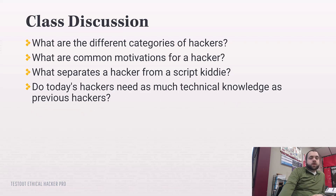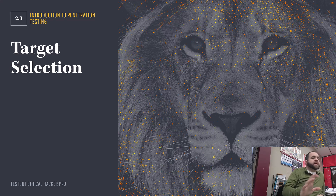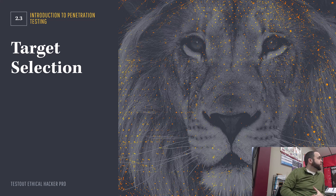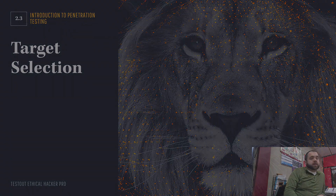We're going to end there. With 2.3, we'll pick up target selection — talking about scope of work, sitting down with a company and saying what do you want us to attack and what shouldn't we be touching, making sure we're on the up and up and not held liable. Any questions? Awesome.